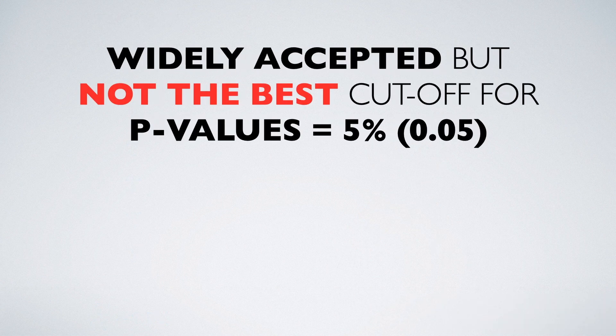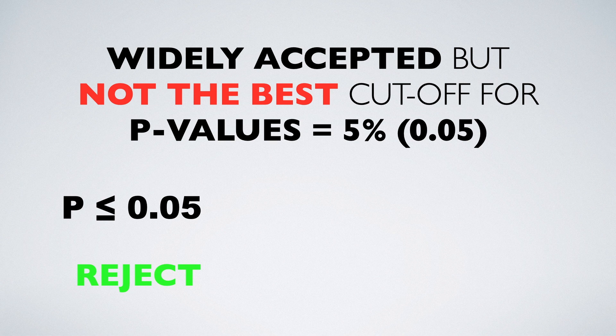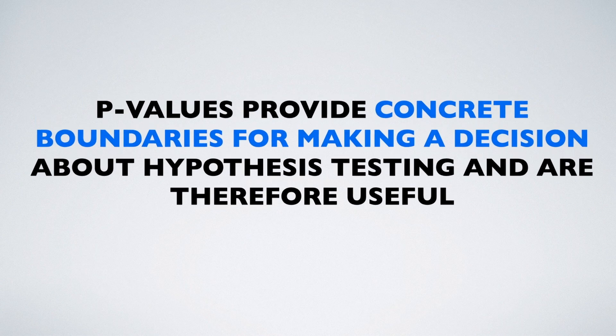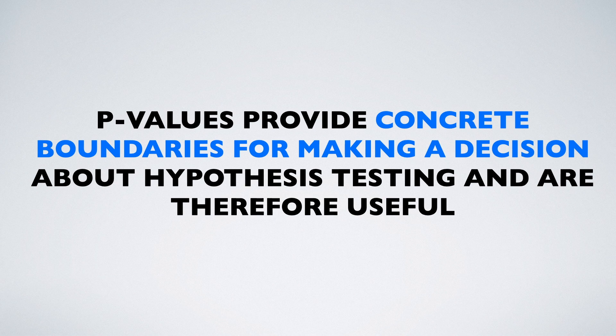A widely accepted, but by no means the best cut-off for a p-value is 5%. That means that if your p-value is below 0.05, you can reject the null hypothesis. While if your p-value is above 0.05, you fail to reject the null. So p-values provide concrete boundaries for making the decision about hypothesis testing and are therefore very useful.